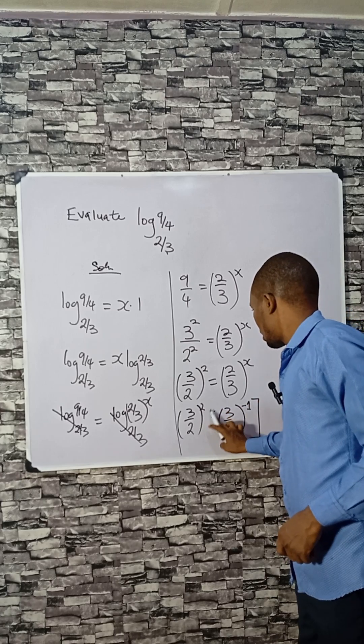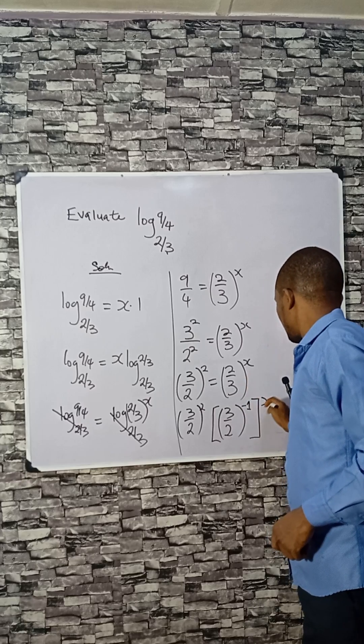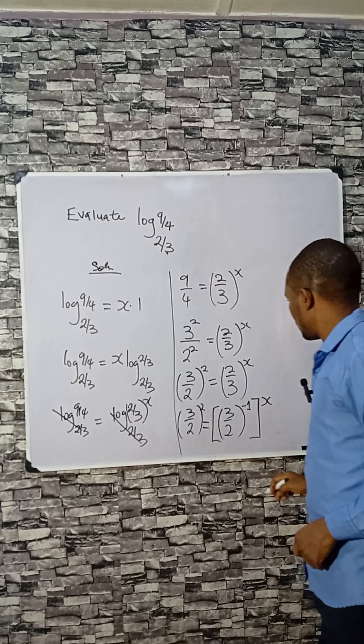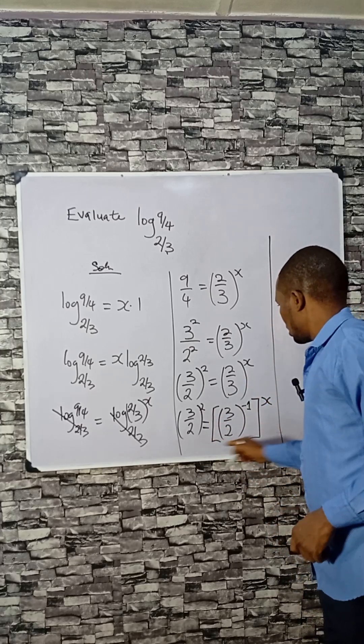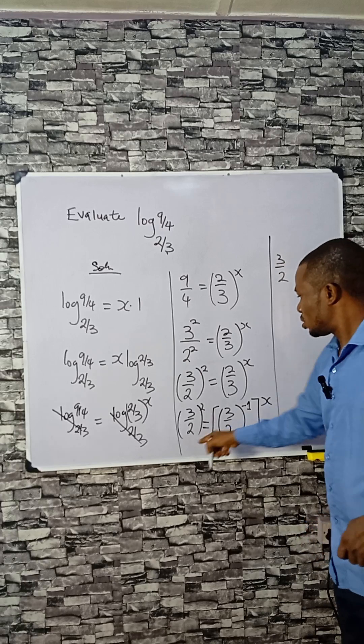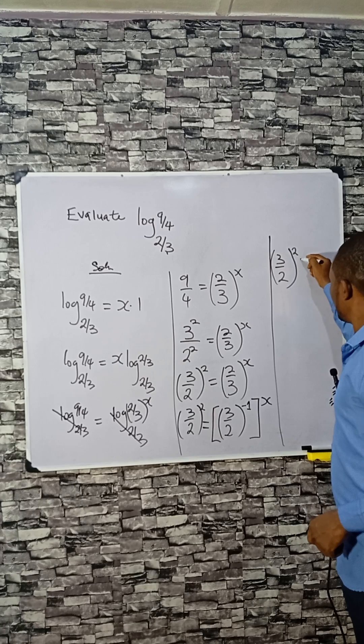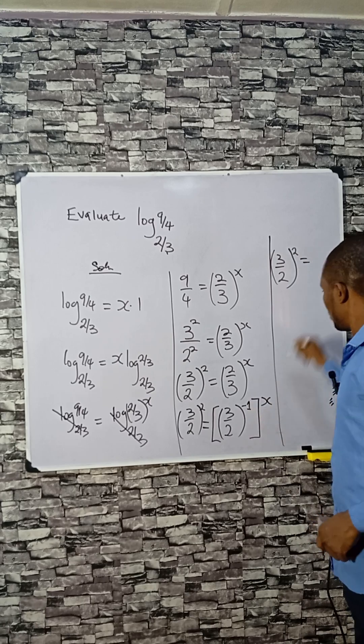Then multiplied by x here. So if we clear this, we have 3 over 2, which is this raised to power x or 2, equals to this term. This will give you...